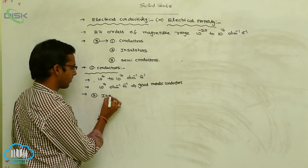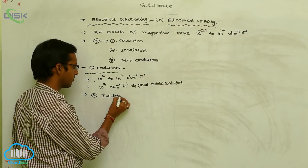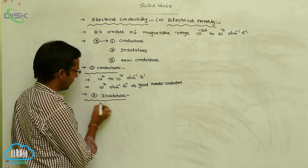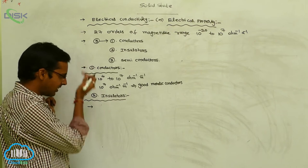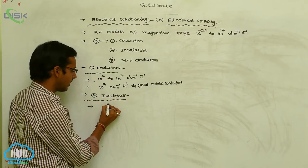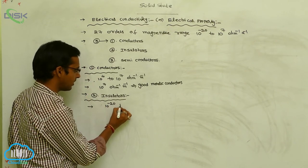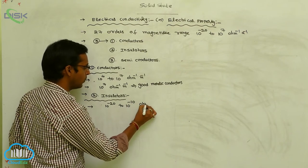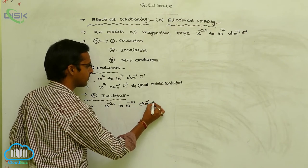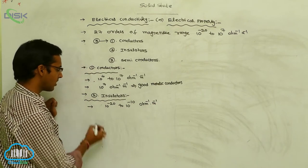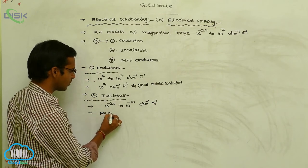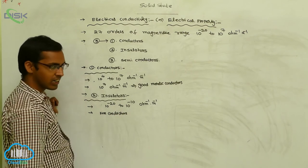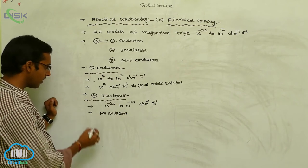The second type is insulators. The insulator conductivity range is 10⁻²⁰ to 10⁻¹⁰ Ohm⁻¹ meter⁻¹. These are also called non-conductors, meaning they do not show conductivity property.